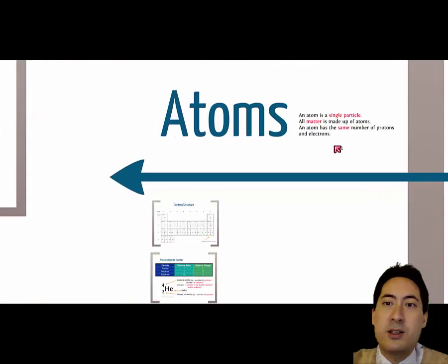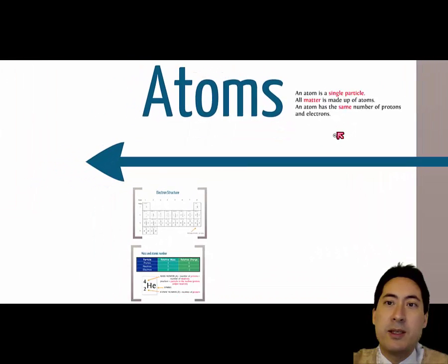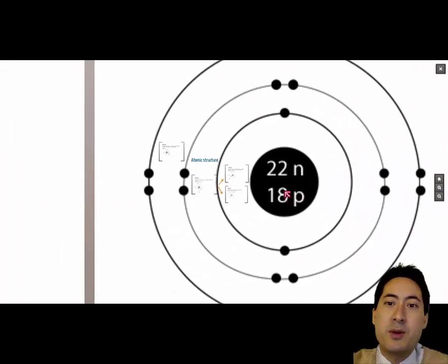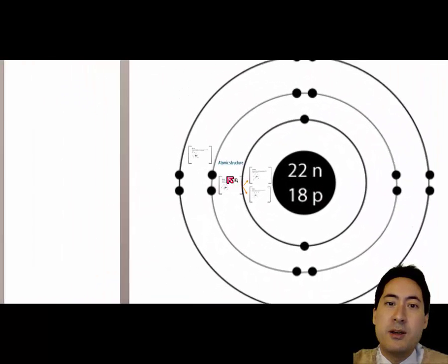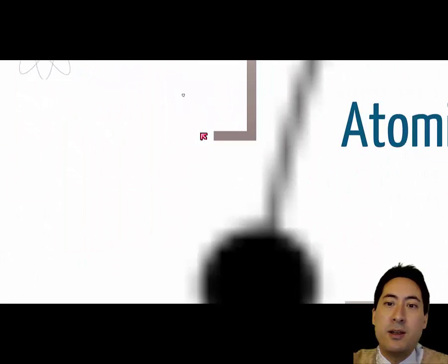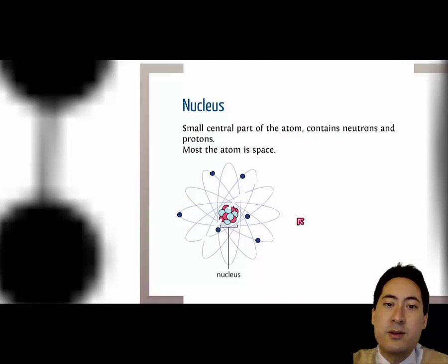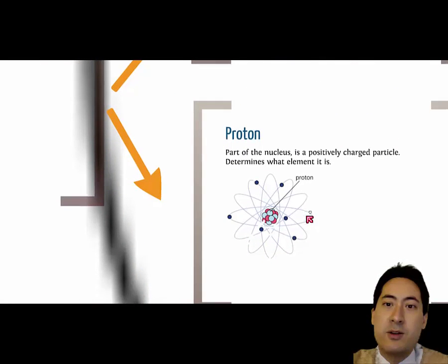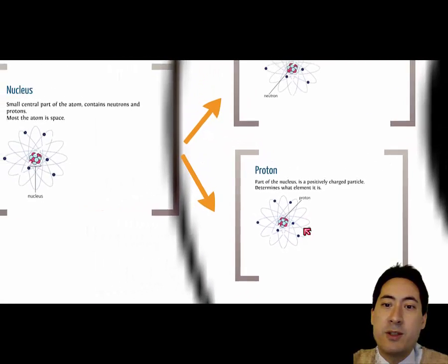Okay, so let's just go through an atom before we get into compounds. Atoms are made up of protons, neutrons and electrons. Okay, so here we have the electrons are on the outside. The neutrons are in the nucleus. This is the nucleus made up of neutrons that have no charge and protons that have a positive charge.